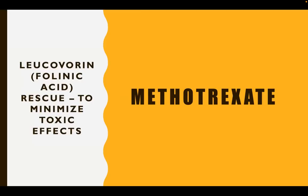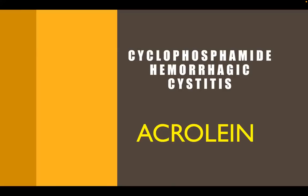What about methotrexate? Methotrexate is a dihydrofolate reductase inhibitor. To decrease the toxic effects of this chemo drug, we give folinic acid or leucovorin — this is called the leucovorin rescue. What about cyclophosphamide and the antineoplastic ifosfamide? They are notorious for causing hemorrhagic cystitis, because of the metabolite acrolein. The antidote is mesna.